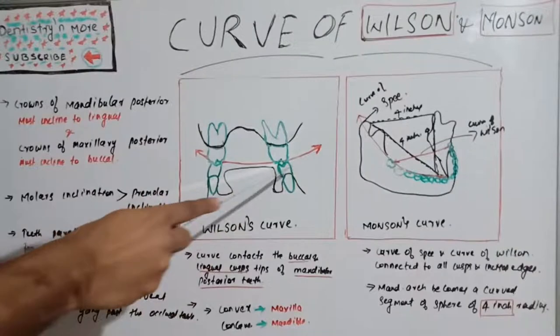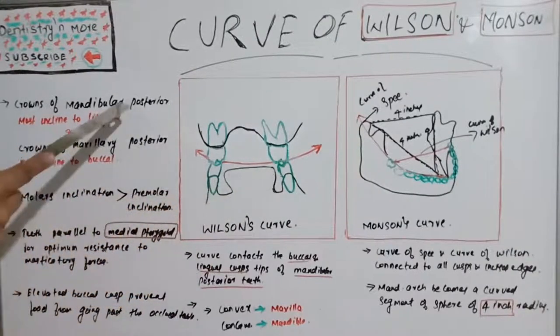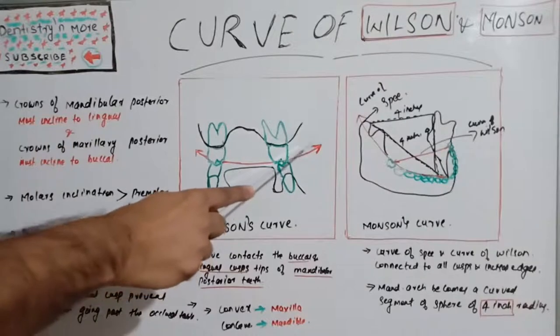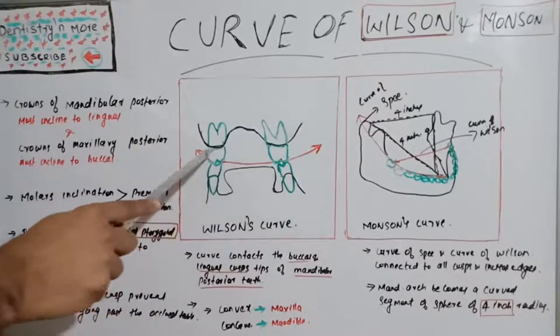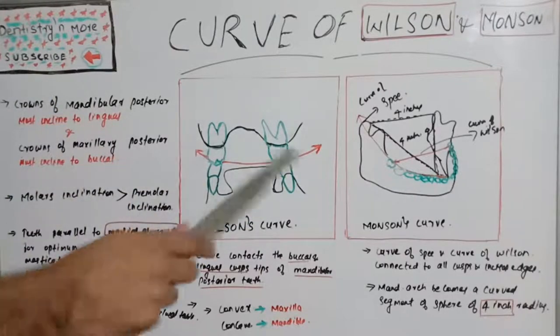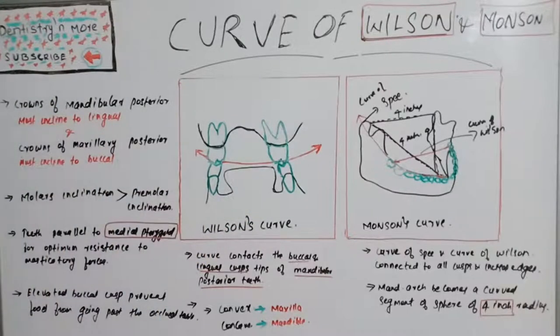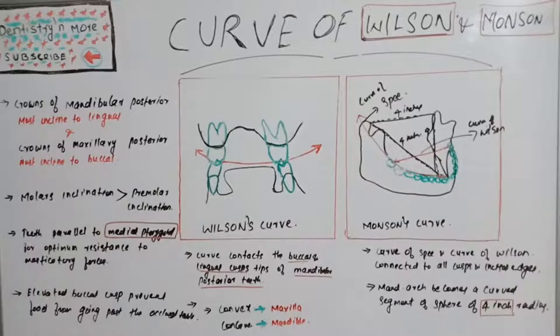You can see this red line which passes through the buccal and lingual cusps. This will be concave in the mandible or lower teeth and convex in the upper teeth or maxillary teeth. It is a curve which contacts the buccal and lingual cusp tips of mandibular posterior teeth, and it is convex in maxilla and concave in mandible.